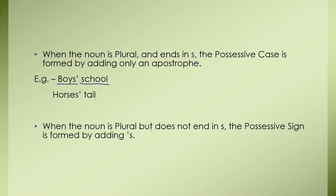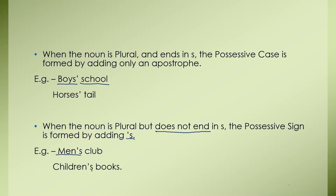When the noun is plural but does not end in S, the possessive sign is formed by adding an apostrophe and S. For example, 'men's club' — here the word 'men' is plural but does not end in S, hence we are using apostrophe and S to show possession. Another example: 'Children's books'.